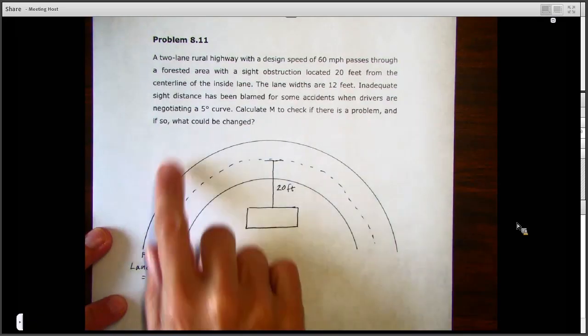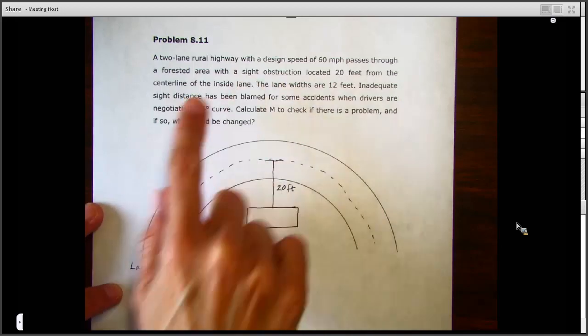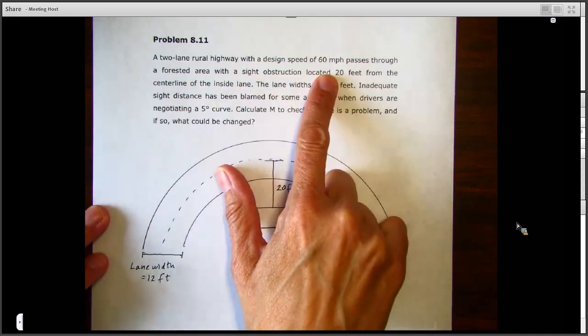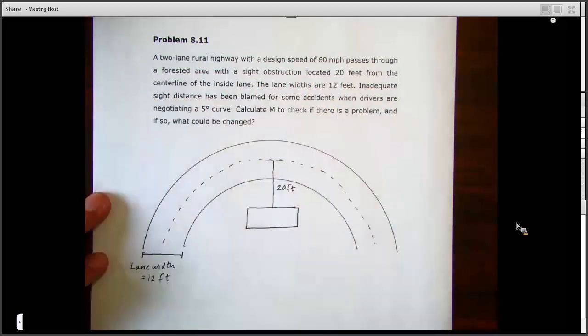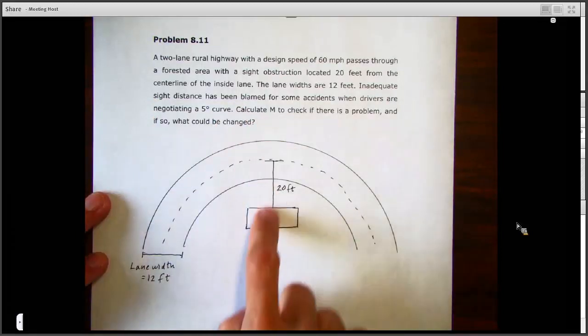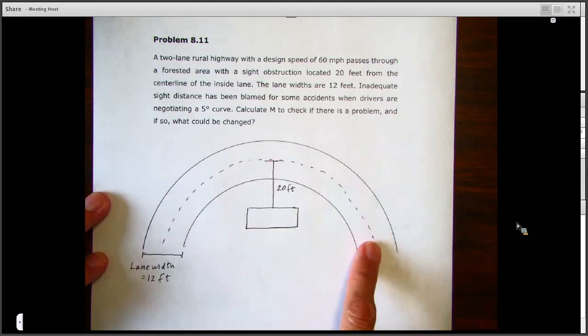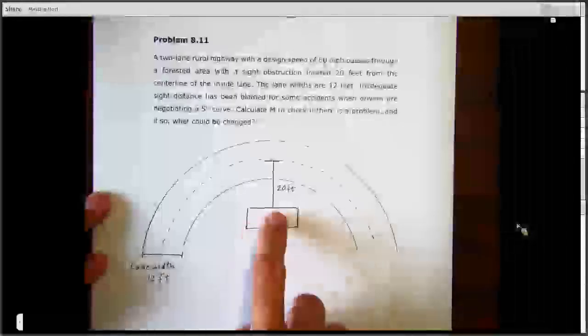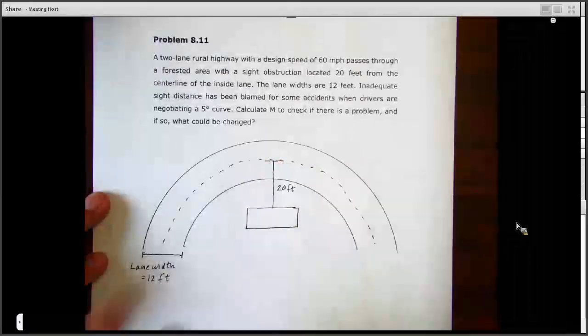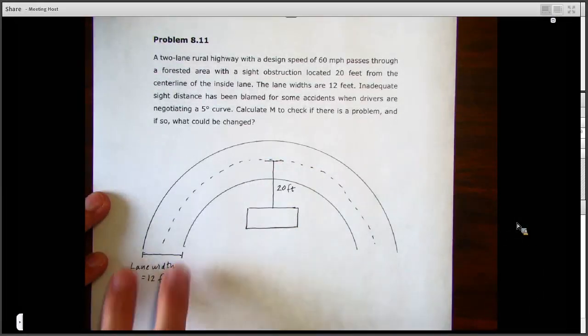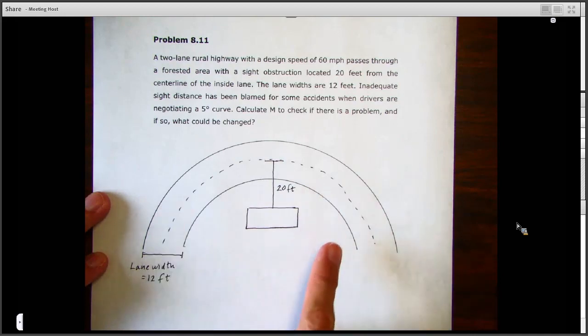Alright, in this problem we're looking at a two-lane rural highway with a design speed of 60 miles per hour that passes through a forested area with a site obstruction located 20 feet from the center line of the inside lane. I did a little sketch here of that inside lane, and here's our obstruction located 20 feet from the center line. The lane width is 12 feet, and inadequate sight distance has been blamed for some accidents when drivers are negotiating this five-degree curve.